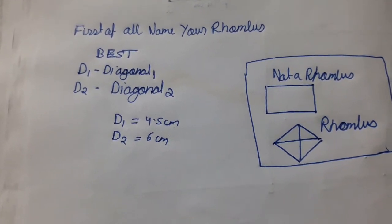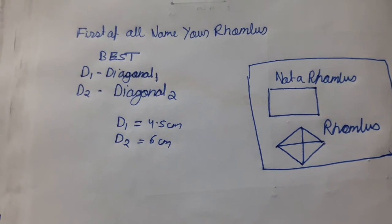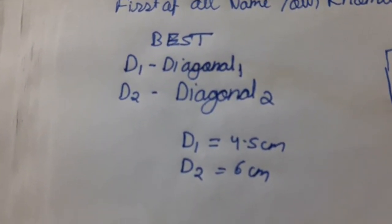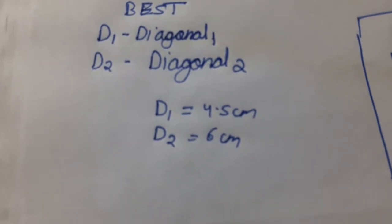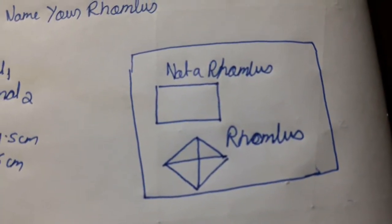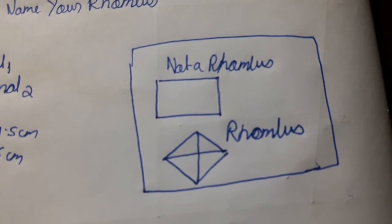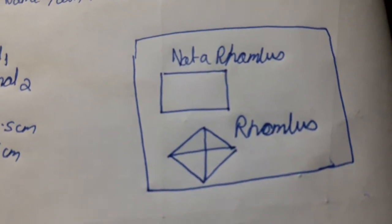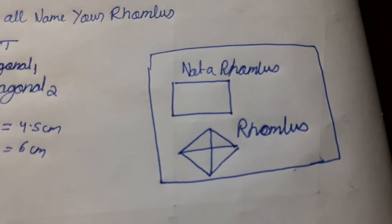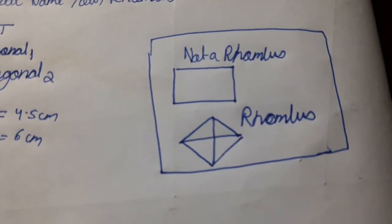And then you have to name your diagonals also, like D1 and D2 I have kept for them. As you can see, D1 is 4.5 cm and D2 is 6 cm. Now you have to be careful when you draw your rough figure. It should be like a graphical representation of what you are going to draw. So if you are going to draw a rhombus in the rough, you don't draw a rectangle, you draw a proper rhombus.